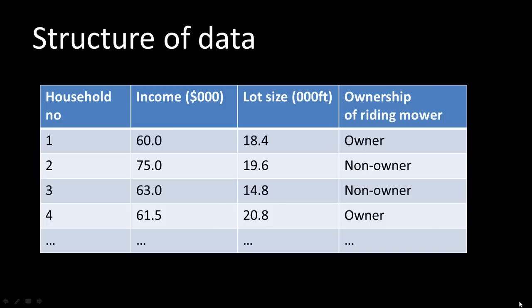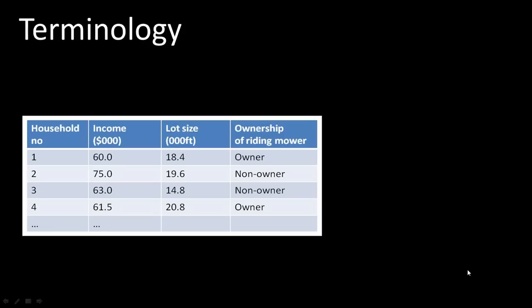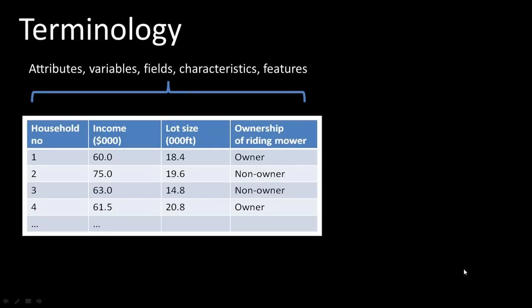Let's look at the terminology. The columns of a data file are referred to by different names at different points in time. They're all equivalent. A data file consists of a bunch of attributes, variables, fields, characteristics, or features. They're all really saying the same thing. Household is an attribute, is a variable, is a field, is a characteristic, it's a feature, everything. Those are just different ways by which columns of a data file are referred to.